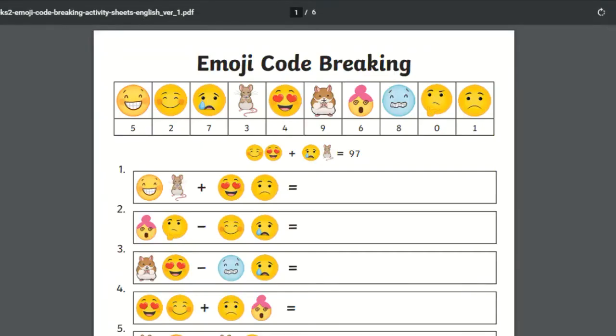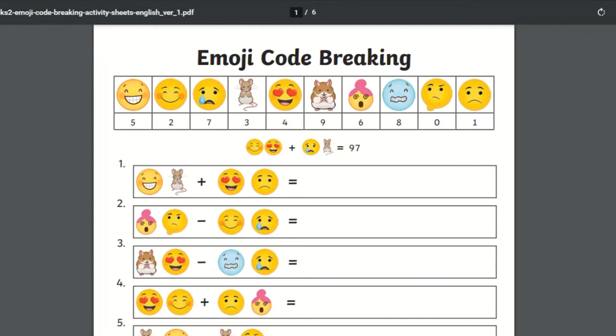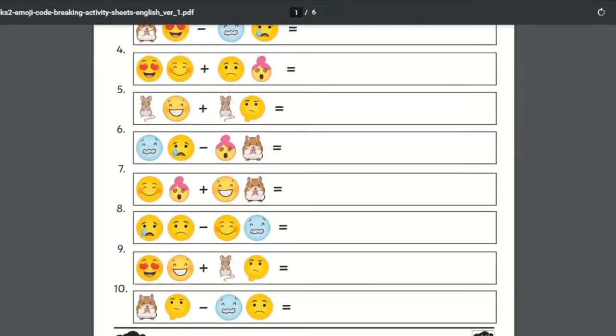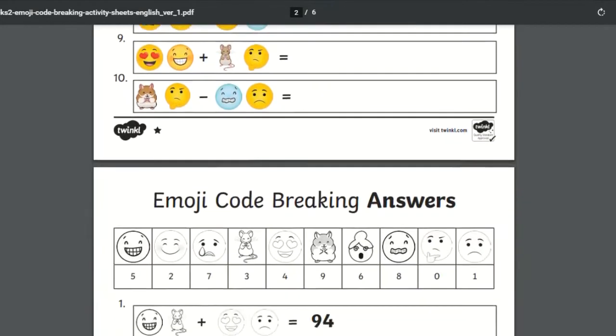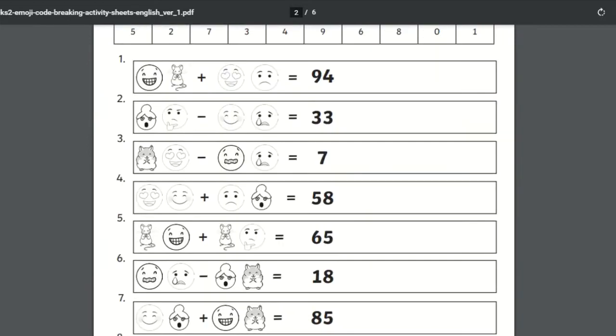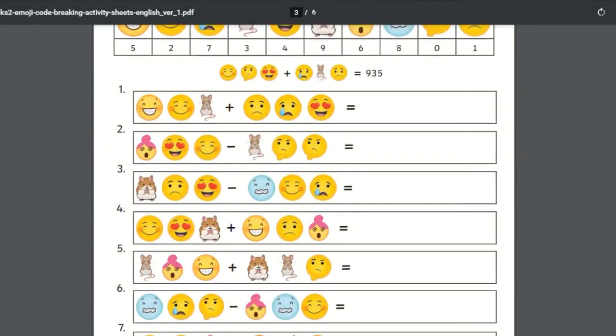This emoji code breaking activity is a fun and engaging way to help children practice and apply their knowledge of adding and subtracting mentally and using a formal written method such as column addition and subtraction.